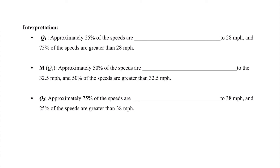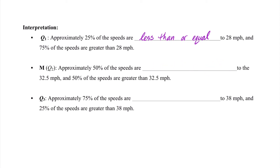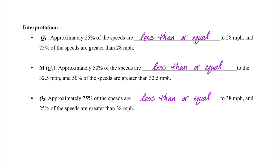Moving to the interpretation: Q1 means approximately 25% of the speeds are less than or equal to 28 miles an hour, and 75% are greater than 28 mph — this is our 25th percentile. The median (Q2) states that approximately 50% of the speeds are less than or equal to 32.5 mph and 50% are greater. Lastly, Q3 means approximately 75% of the speeds are less than or equal to 38 mph, and 25% are greater than 38 mph.